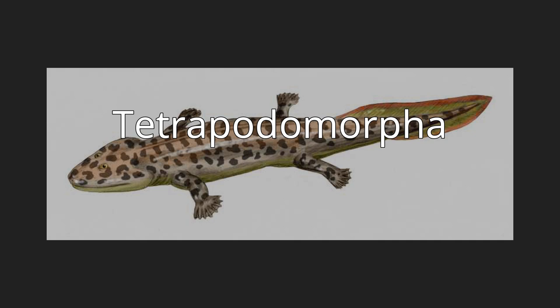Among the characteristics defining tetrapodomorphs are modifications to the fins, notably a humerus with a convex head articulating with the glenoid fossa — the socket of the shoulder joint.